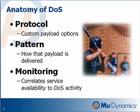To understand how a targeted service reacts to varying levels of application-specific traffic, three variables need to be defined: what to send, how fast to send it, and how to measure its impact on the target.